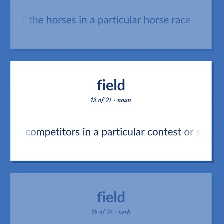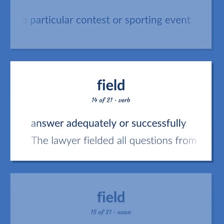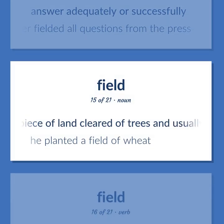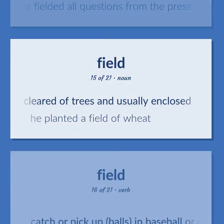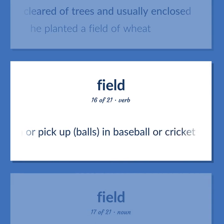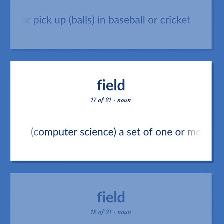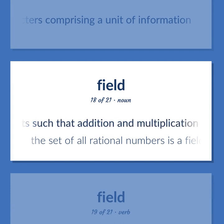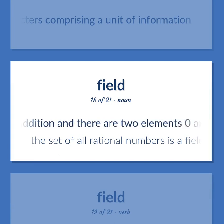All the competitors in a particular contest or sporting event. Answer adequately or successfully. The lawyer fielded all questions from the press. A piece of land cleared of trees and usually enclosed. He planted a field of wheat. Catch or pick up balls, in baseball or cricket. Computer science: a set of one or more adjacent characters comprising a unit of information. Mathematics: a set of elements such that addition and multiplication are commutative and associative and multiplication is distributive over addition and there are two elements 0 and 1. The set of all rational numbers is a field.